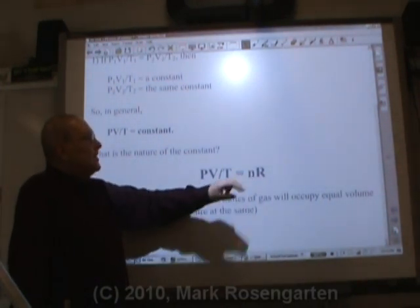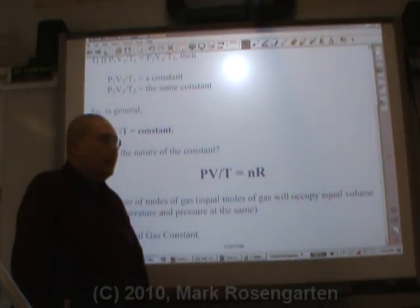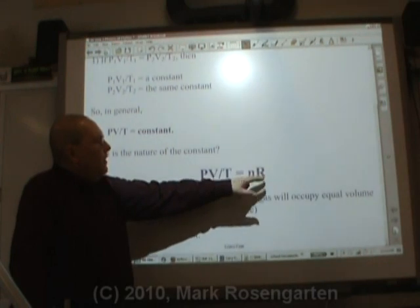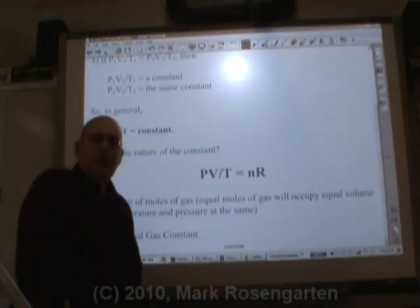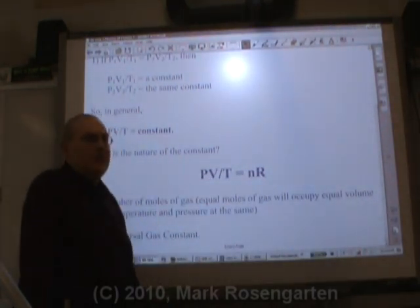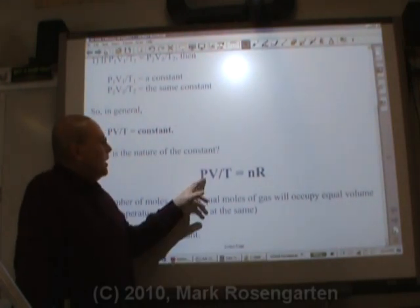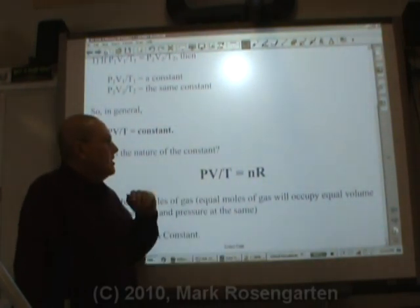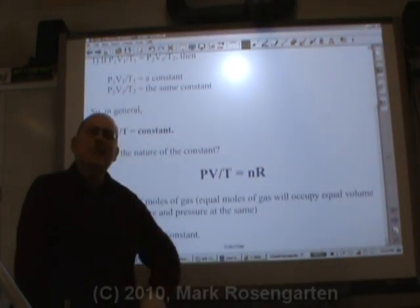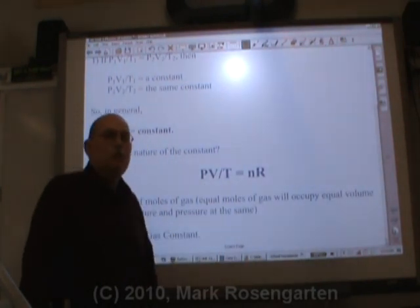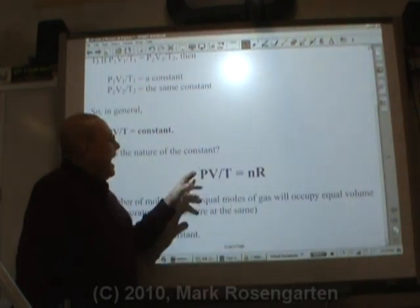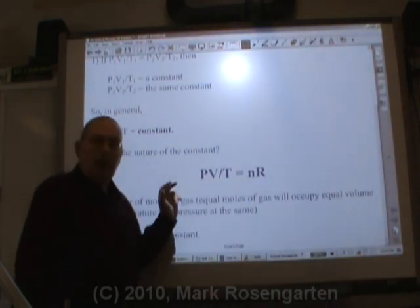This constant is made of two factors. One is the number of moles of gas that you have trapped inside your container and a proportionality constant called the universal gas constant that basically tells you the pressure, volume, number of moles, and temperature with one number, kind of like specific heat, right? 4.18 joules per gram degree Celsius. This is going to be something atmosphere liters per mole Kelvin.